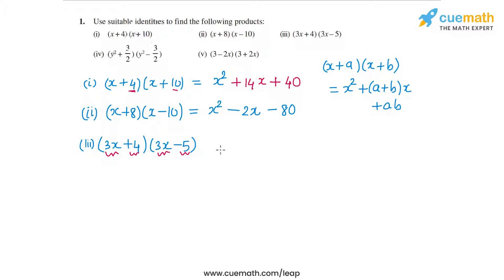So I will have x², which is (3x)² in this case, so 9x². Then we have a + b, so 4 + (-5), that's -1, so a + b times x, which is times 3x. And then ab, so 4 into -5 is -20.